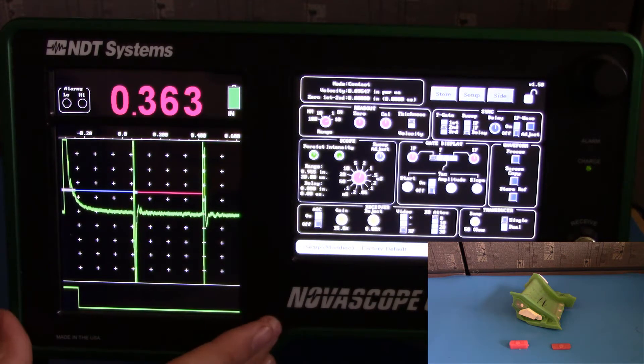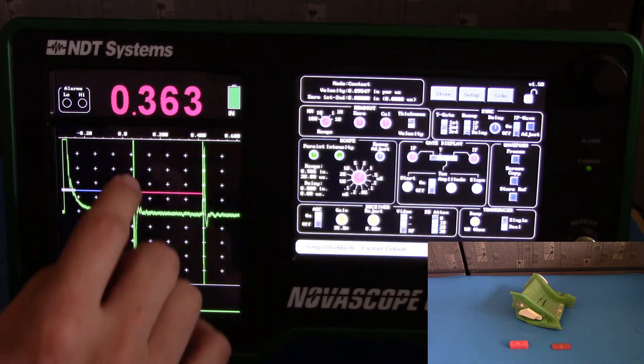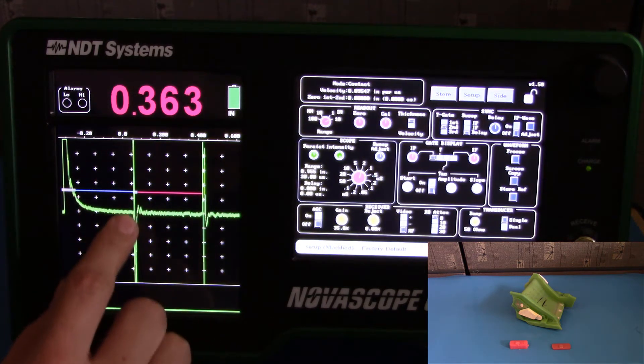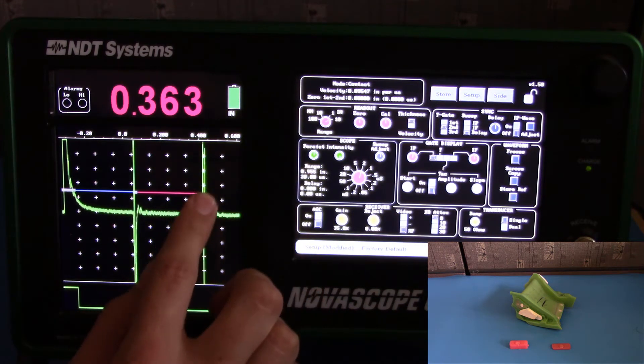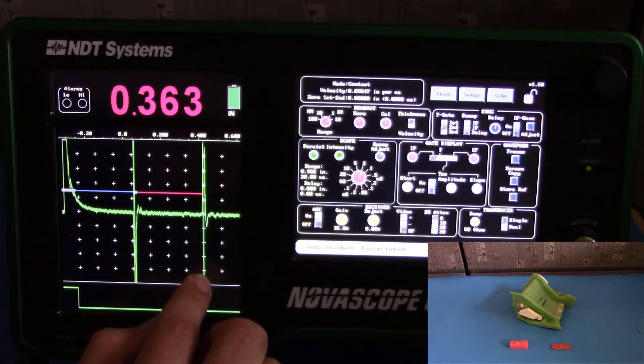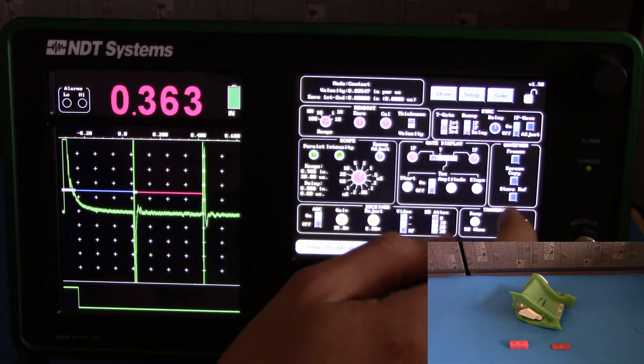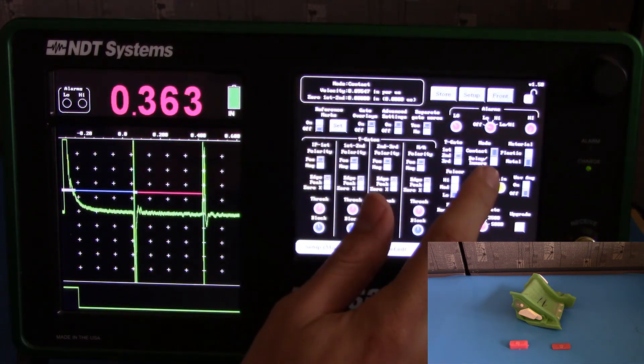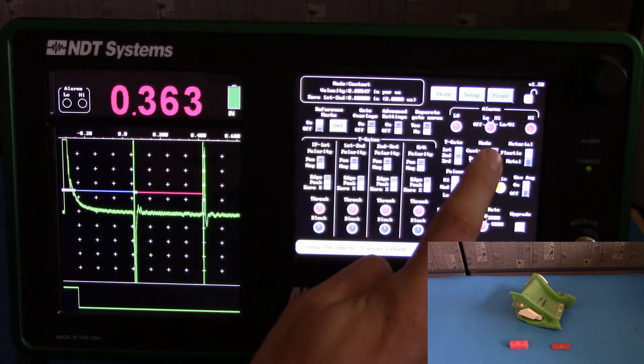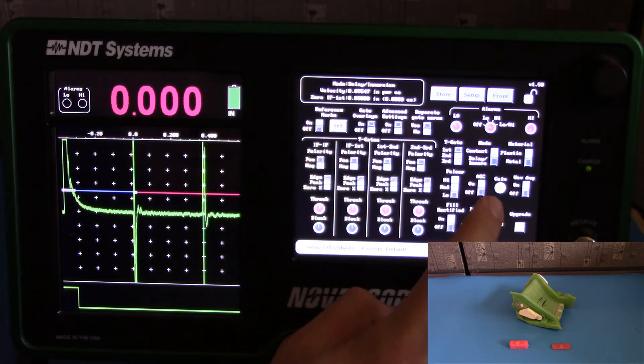We need to set the Novoscope up to account for our new echoes. We've got an interface echo where the probe meets the delay line. And we've got a back wall echo, which is the back wall echo from the delay line itself. Go to your side menu. Go to mode. And from contact, hit the switch so that we are in delay immersion mode.